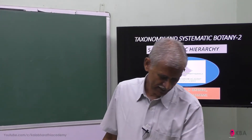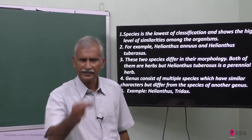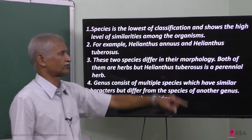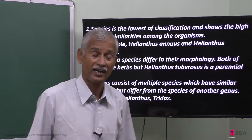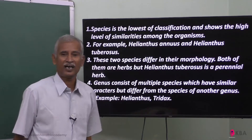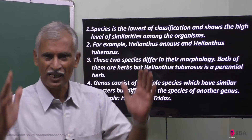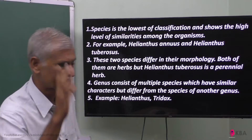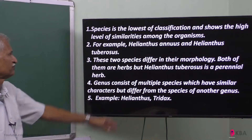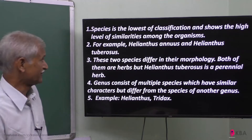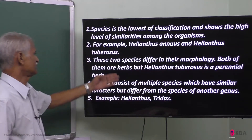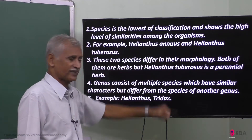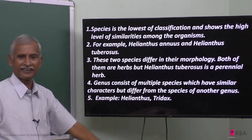Taxonomical hierarchy is the basic group, starting group, lowest group. The lowest classification group is the species. Species is the lowest classification with the highest similarity. For example, Helianthus annuus is a species and Helianthus tuberosus is a species.